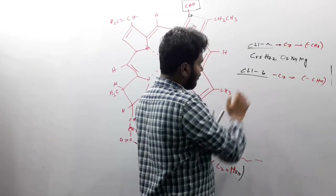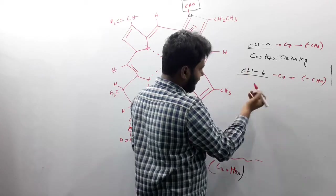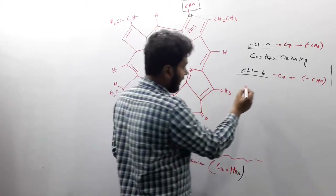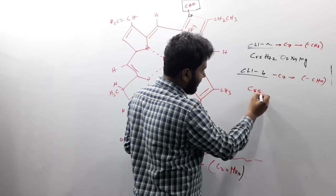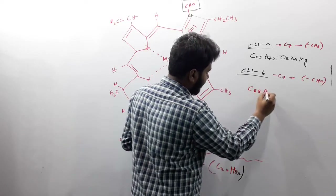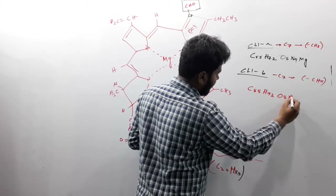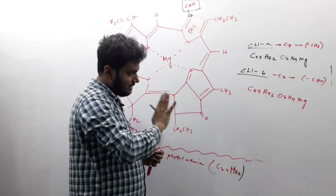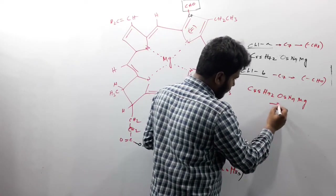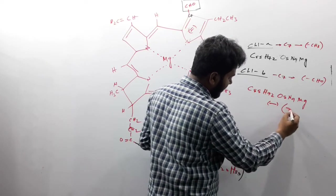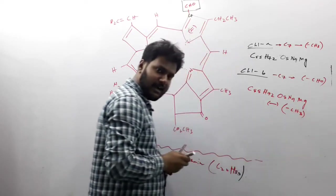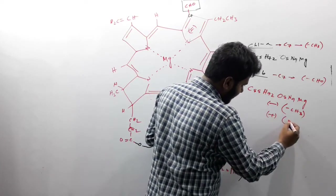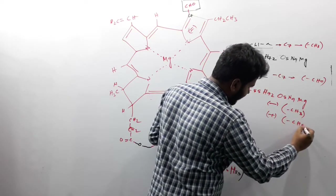So what will be the chemical formula of chlorophyll B? Starting from chlorophyll A — C55, H72, O5, N4, Mg — we delete the methyl group and add an aldehyde group in its place.